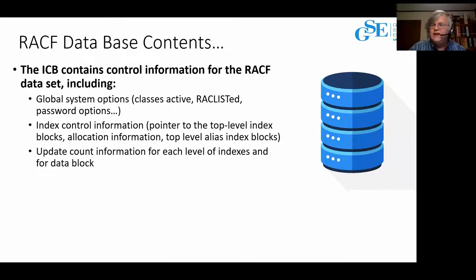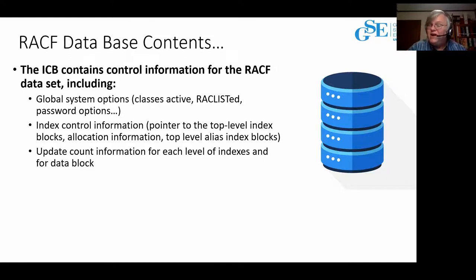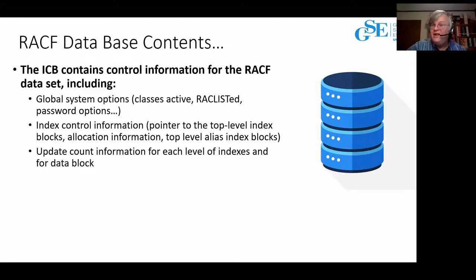The inventory control block - the ICB at RBA zero - is the most important block in the RACF database. It stores global system options: all those SETROPS settings about what classes are active. It's also the anchor point for the indexing used for all data in the RACF database - the ICB points to the top-level index block. Critically, there are counters in the ICB. When RACF updates something - say you issue a RACF administrative command to change a profile - RACF increments a counter indicating a data block has changed. Other systems, when they read the ICB, compare the counter to their last-read value, see there's a difference, and take the appropriate action.